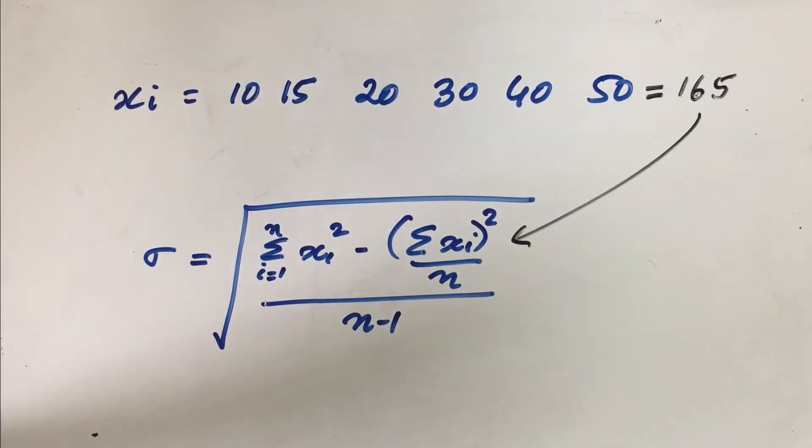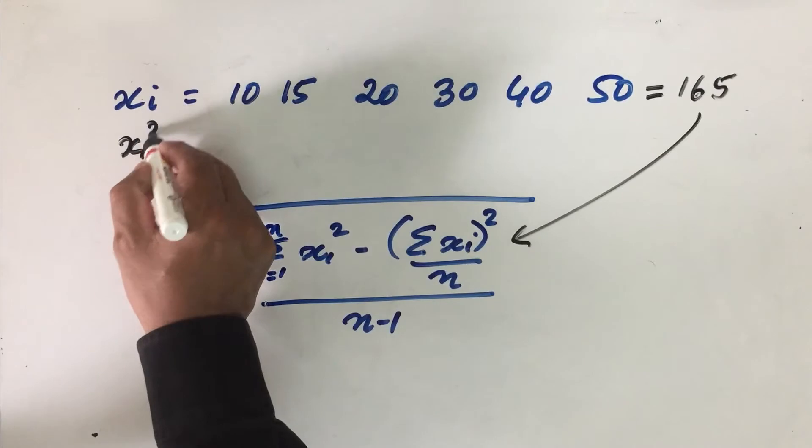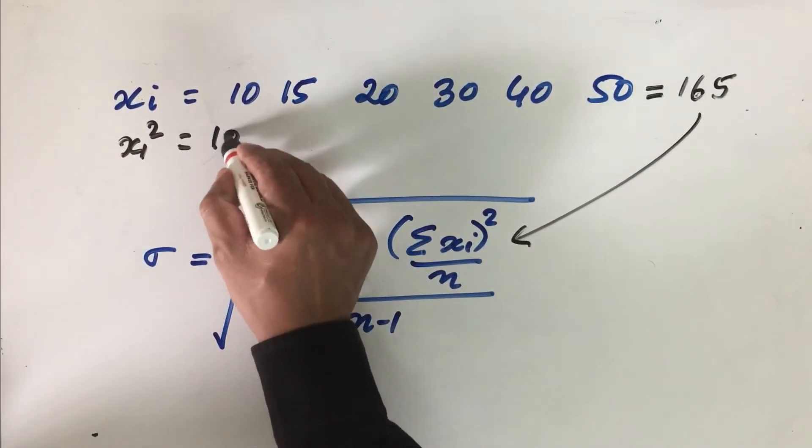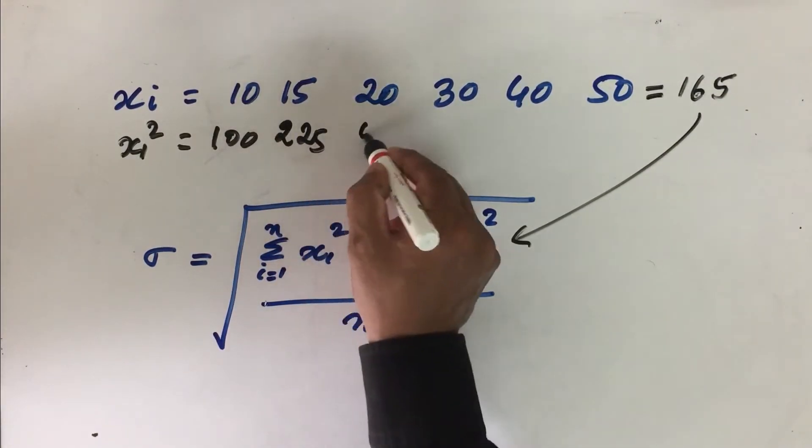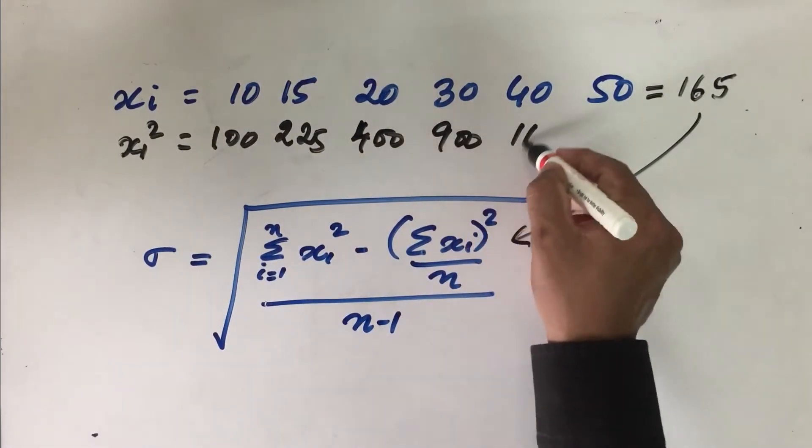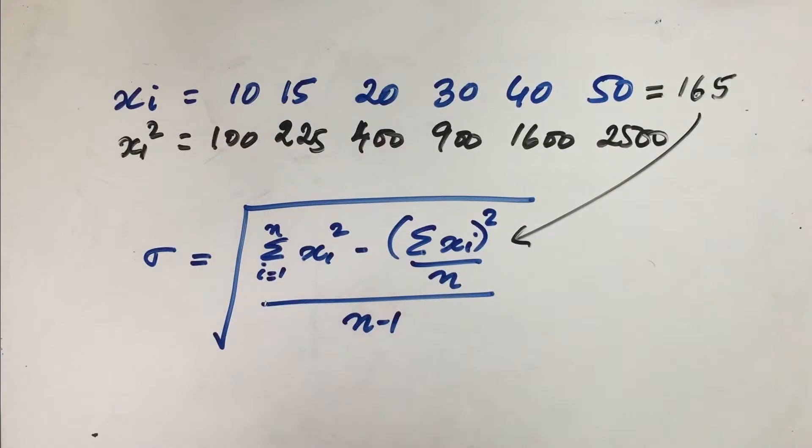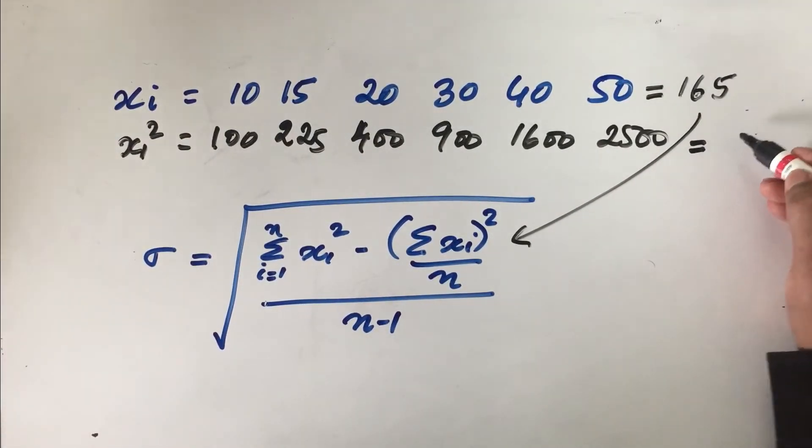Now we need to find xi square, so therefore let us find out xi square. So 10 into 10, this is 100, this will be 225, this is equal to 400, this is equal to 900, 1600, and this is 2500.